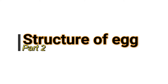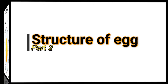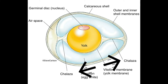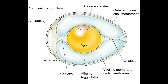The air cell is an empty space located at the large end of the egg, between the inner and outer shell membranes. The chalaza is a spiral rope-like strand that anchors the yolk in the thick egg white.